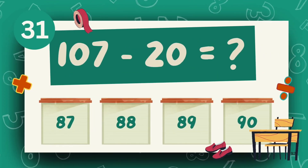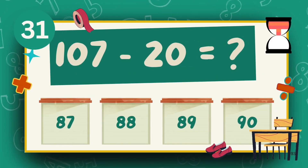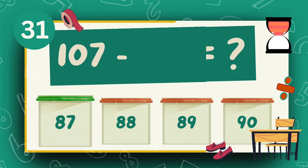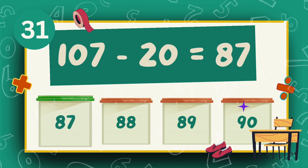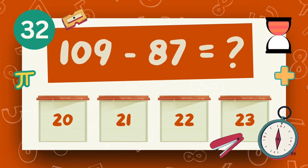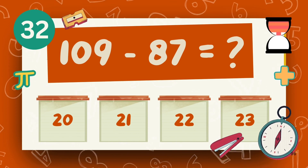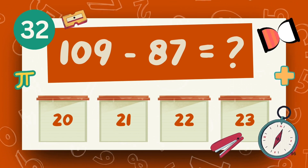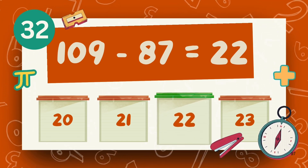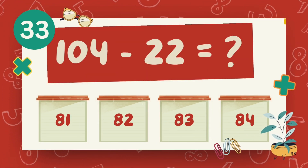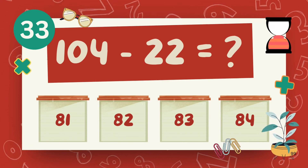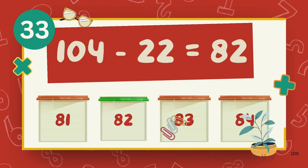What is 107 minus 24? The answer is 87. What is 109 minus 87? The answer is 22. What is 104 minus 22? The answer is 82.